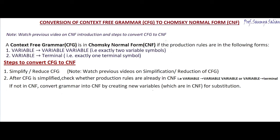In the previous video, we have seen what Chomsky's normal form is. We have also seen what the steps are to convert CFG to CNF. A grammar is said to be in CNF if the production rules are of either of these forms: a variable deriving exactly two variable symbols, or a variable deriving exactly one terminal symbol.